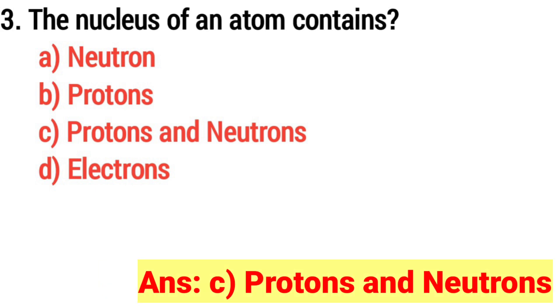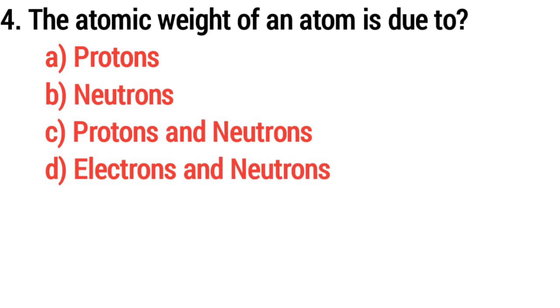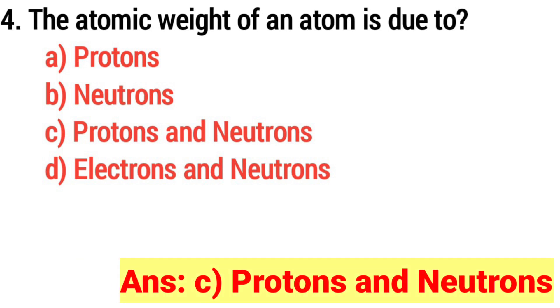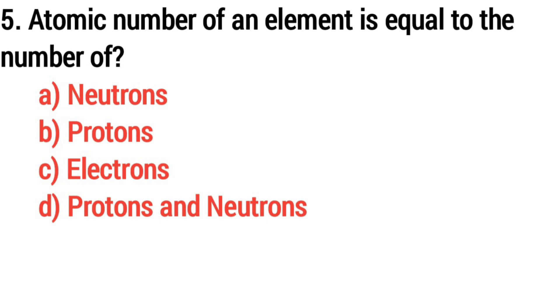Answer: option C, protons and neutrons. Question 4: the atomic weight of an atom is due to? Answer: option C, protons and neutrons. Question 5: atomic number of an element is equal to the number of?